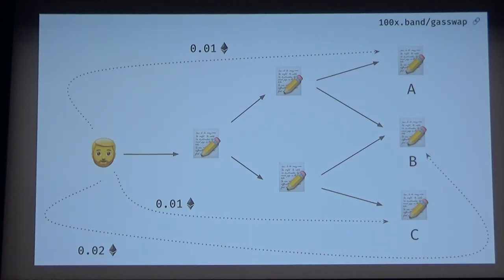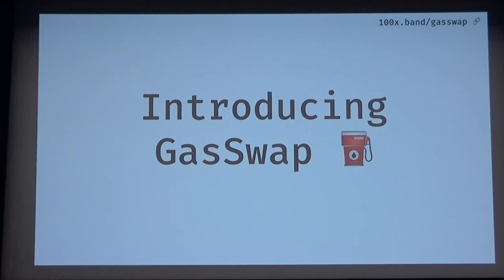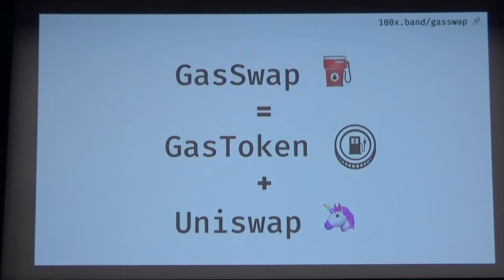It would be better if Bob just called a contract, and each of the contracts basically takes ETH from Bob directly — just like the way gas works right now. The contract consumes gas and it charges the transaction originator directly. Here comes GasSwap. GasSwap is basically a combination of GasToken and Uniswap, built on Ethereum, where you can connect permissionless protocols together to get more useful things.